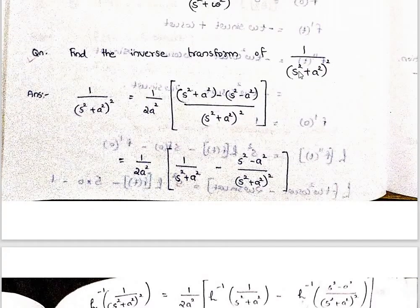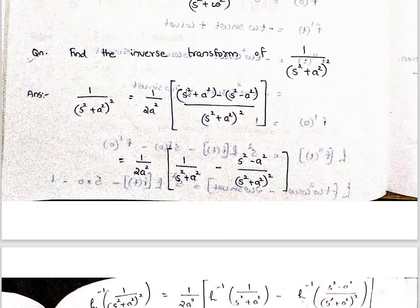Now the inverse Laplace transform of 1 divided by (s squared plus a squared) squared. Rewrite: split 2s squared as s squared plus a squared plus s squared minus a squared, so 2a squared appears in the numerator. Split and use the known results — the denominator is (s squared plus a squared) squared.